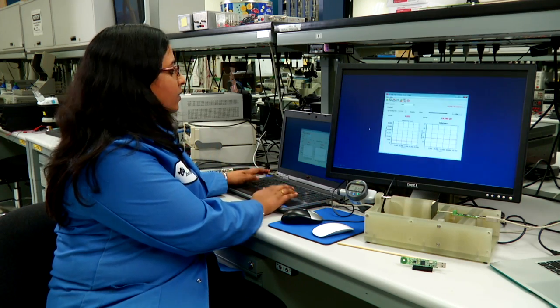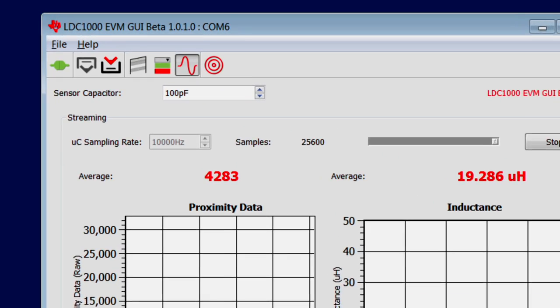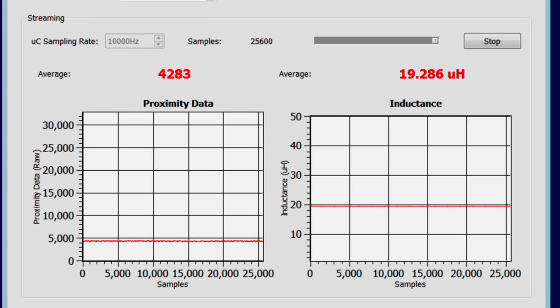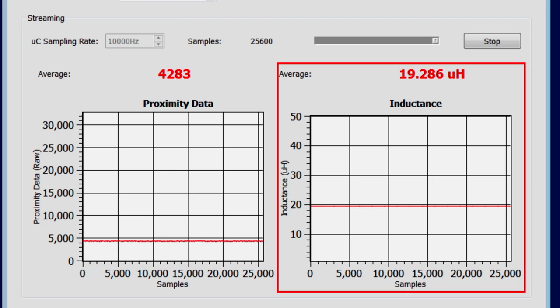As we move into the GUI, the top left part of the GUI is where we have the sensor capacitor value. By default, it's 100 picofarads as in the EVM. The graph on the left is indicative of the RP value and the graph on the right is indicative of the inductance value.